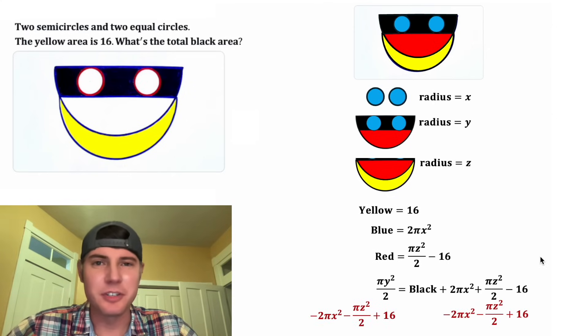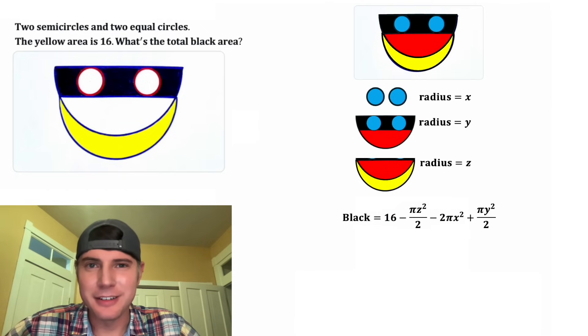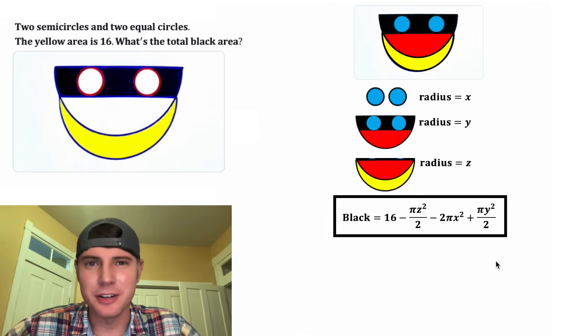And then we can subtract all this stuff from both sides of the equation. On the right-hand side, all of this will cancel out. And now we have a formula for the black area. This looks important. Let's put a box around it.